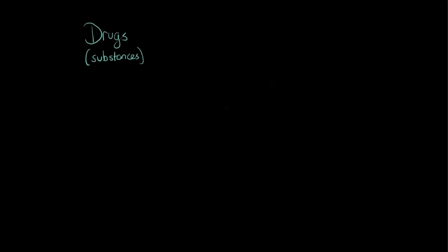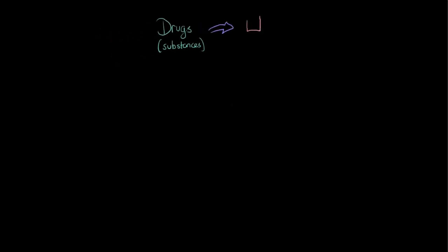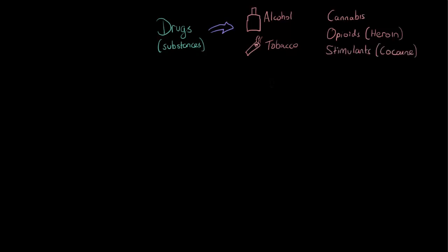Let's consider drugs — I'm also going to call them substances. There's a whole bunch of different drugs and substances that people use. Some of the most common ones include alcohol and tobacco, but also cannabis, opioids (including things like heroin), stimulants (including cocaine and amphetamines), hallucinogens like LSD, inhalants, hypnotics, sedatives, and others. Let us not also forget one of the most commonly used substances, which is caffeine, commonly found in your mug of coffee or tea.